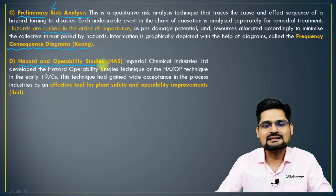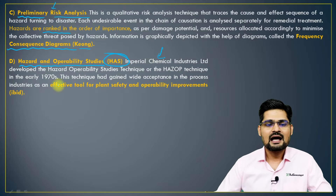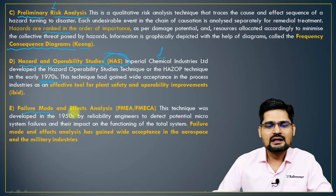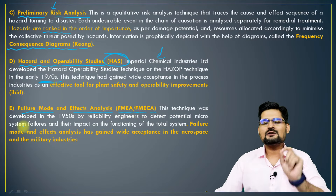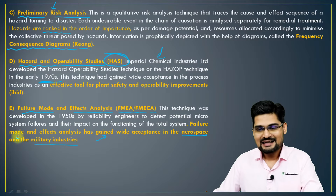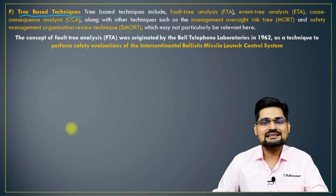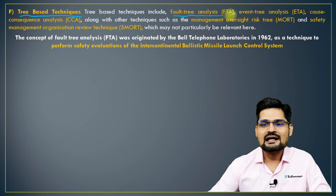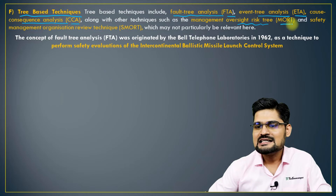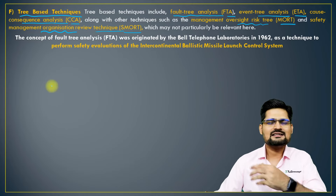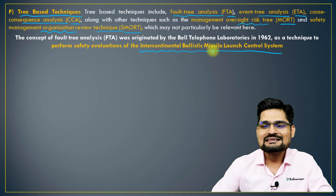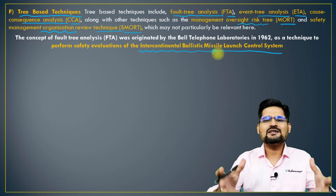Another model is hazard and operability studies — the HAZOP model — which became very popular for chemical and other industries in the 1970s. Then there is failure mode and effect analysis, called FMEA or FMECA, which gained importance in aerospace and military industries for risk assessment. Tree-based techniques include fault tree analysis (FTA), event tree analysis (ETA), cause consequence analysis (CCA), management oversight risk tree (MORT), safety management organization review techniques (SMORT), and several others. For example, FTA was used for risk assessment of intercontinental ballistic missile launch control systems.